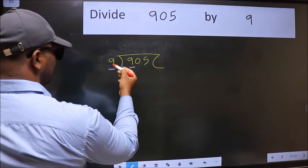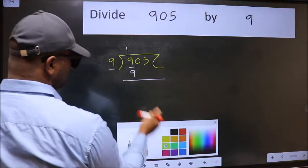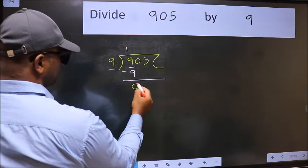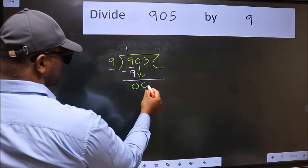When do we get 9 in the 9 table? 9 once is 9. Now we should subtract. We get 0. After this, bring down the beside number. So 0 down.